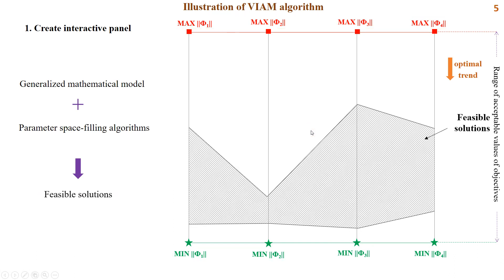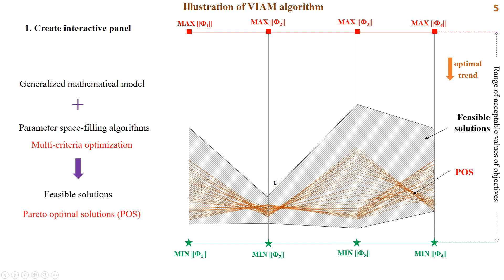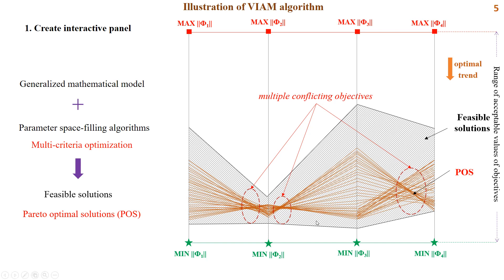The feasible solution domain is defined using the parameter space-filling algorithm. Meanwhile, the genetic algorithm for multi-objective optimization is used to define the Pareto Optimal Set (POS), which is the basis for decision-making. It helps the DM to recognize the conflicting objective functions, thanks to the appearance of trade-offs among them. DM decides to suspend the POS based on the quantity and distribution of solutions on the interactive graph, selecting the mutually-agreed solution.